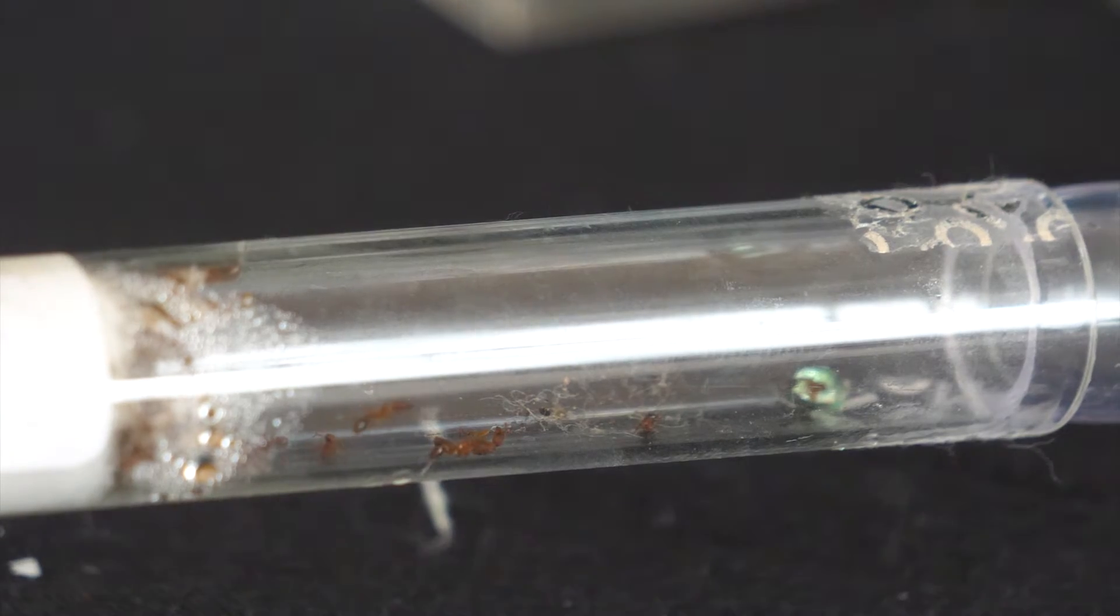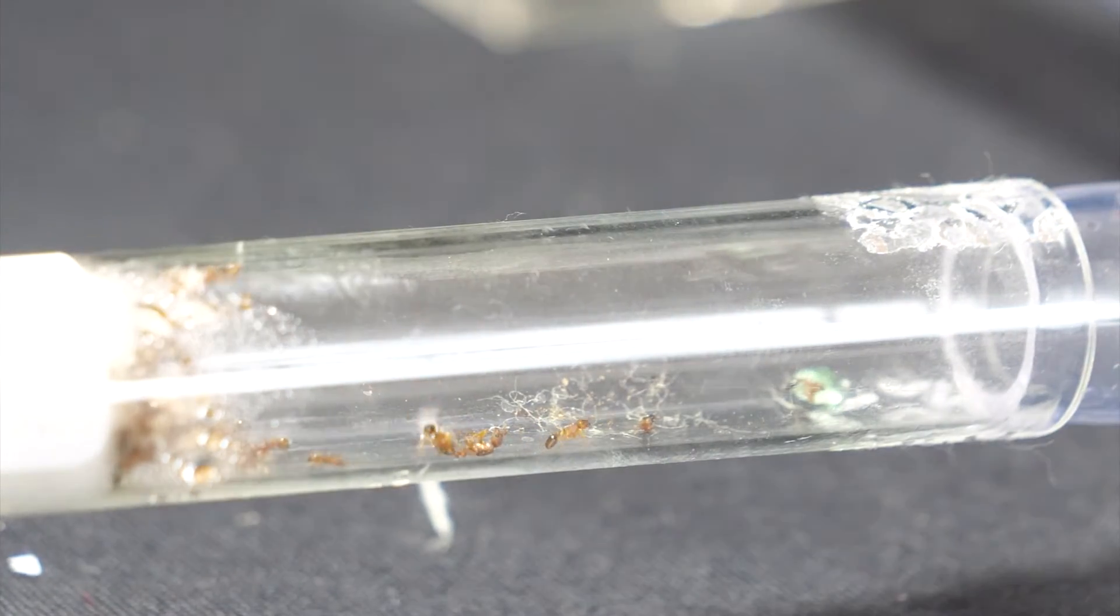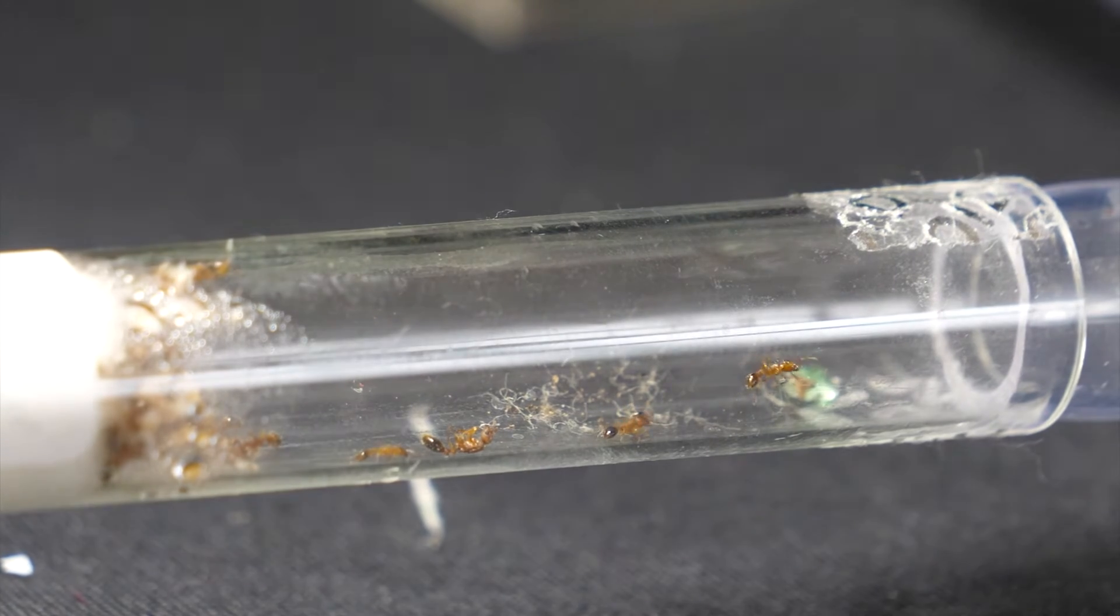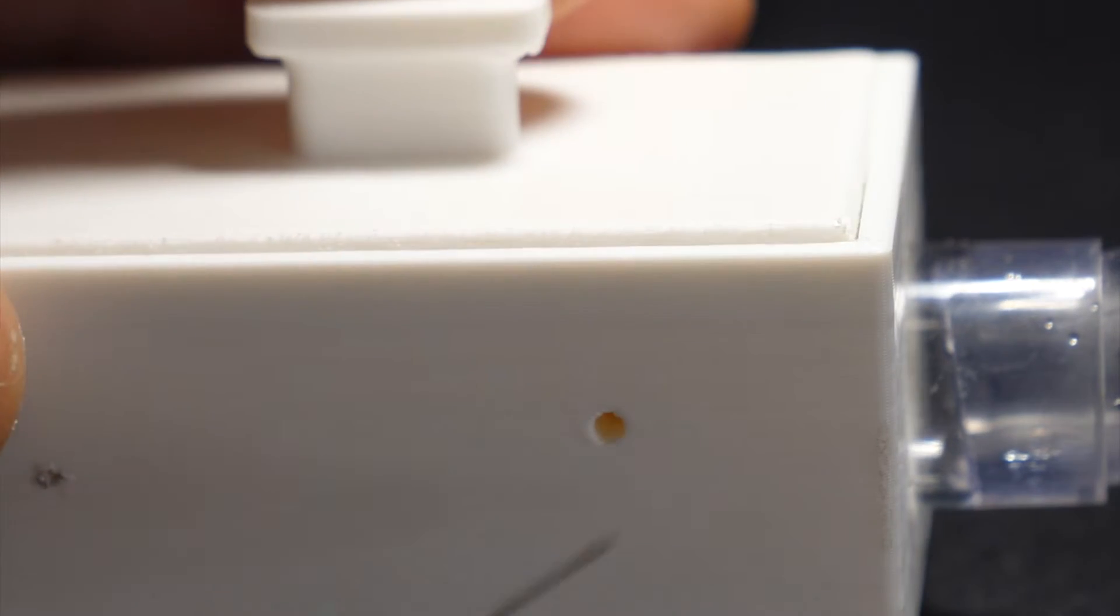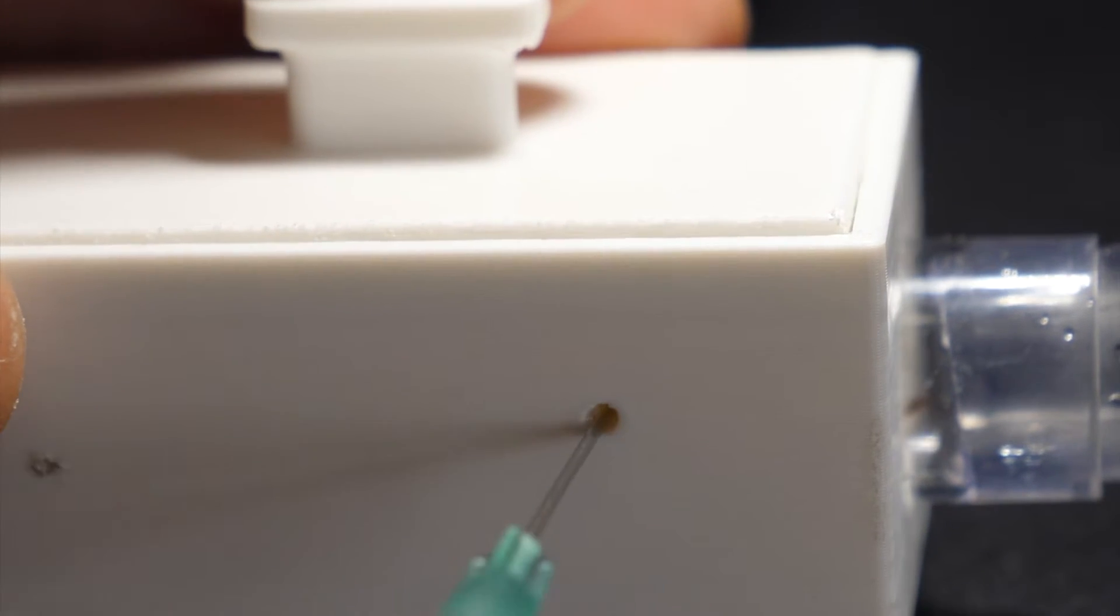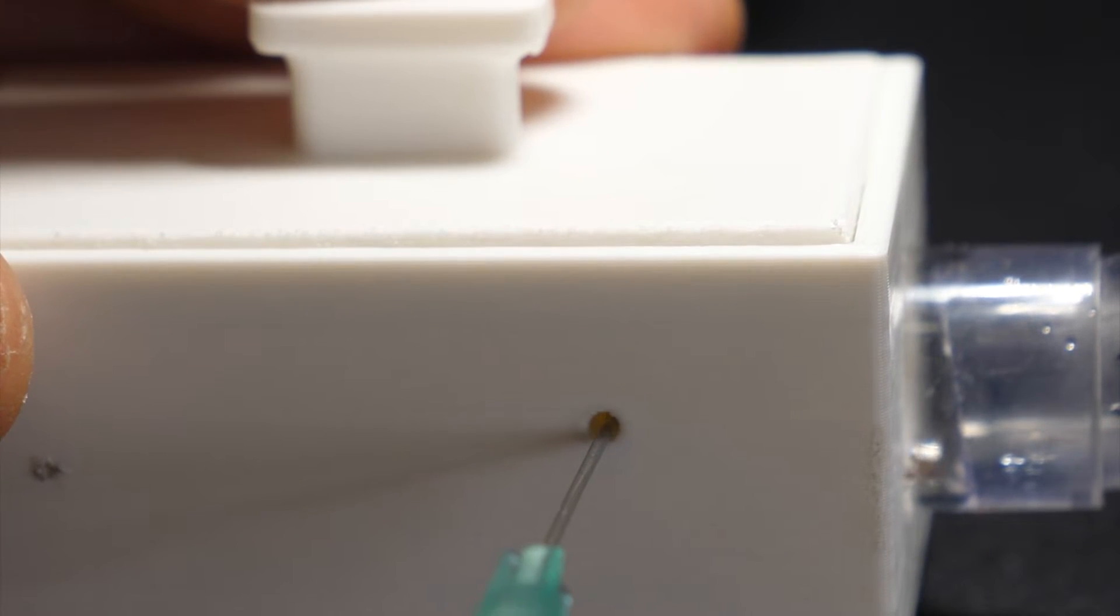To encourage the ants to move out, I shone a bright light onto them. Although before I'd even done this, these ants had begun exploring the new space. And to even further encourage them, I added some water through this hole here to increase the humidity in the nest.